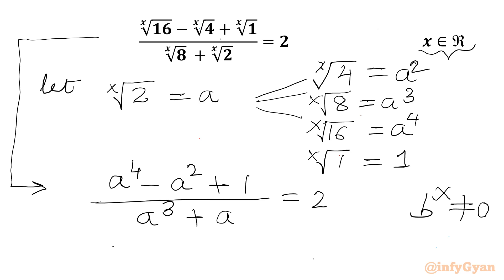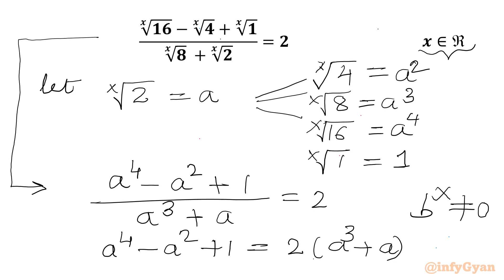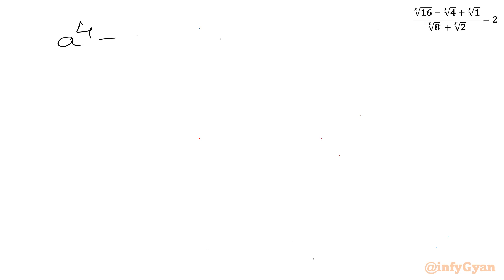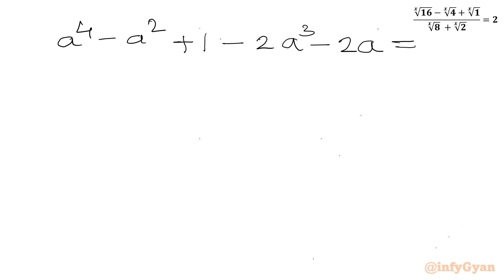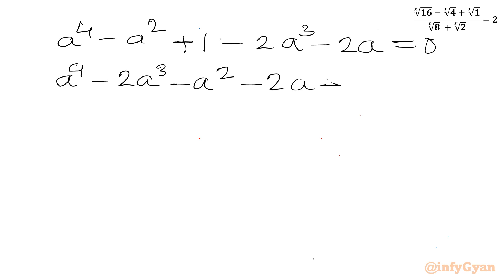I can write a⁴ - a² + 1 = 2(a³ + a). Taking all terms to one side: a⁴ - a² + 1 - 2a³ - 2a = 0. After rearranging: a⁴ - 2a³ - a² - 2a + 1 = 0.